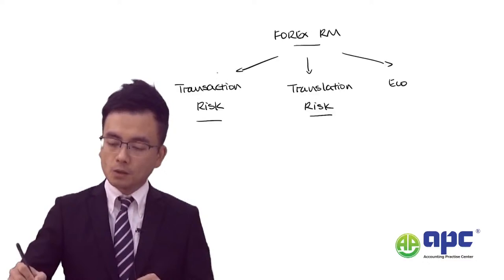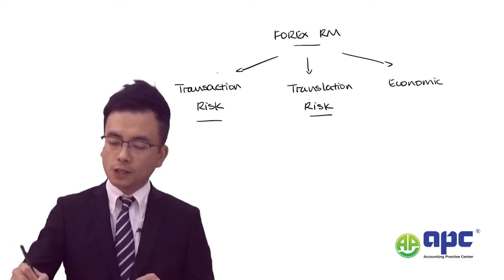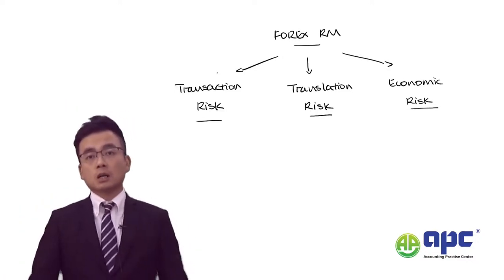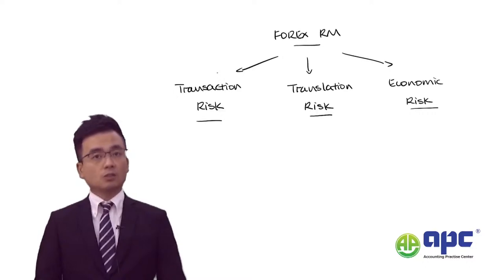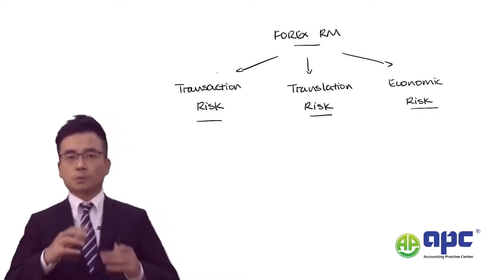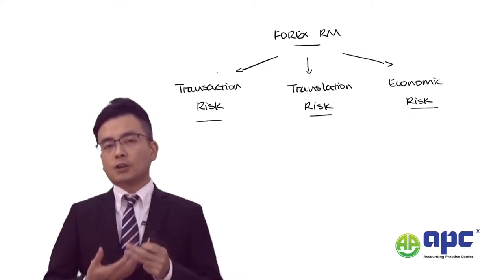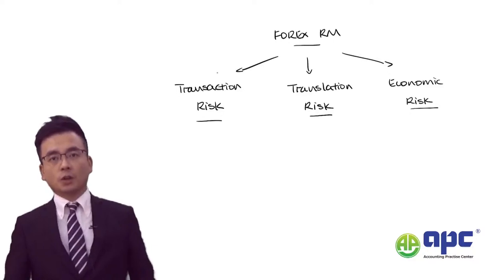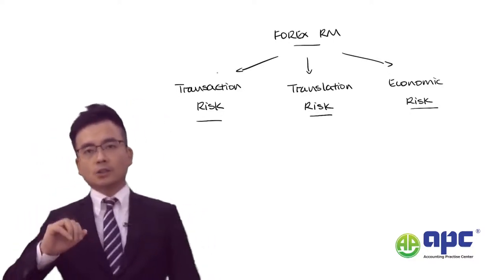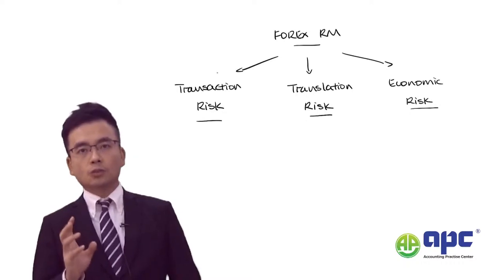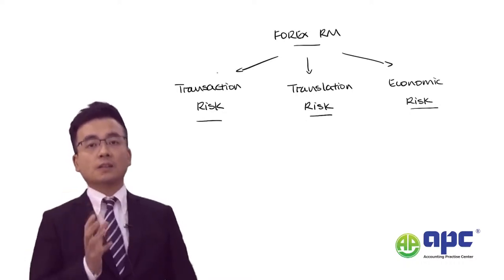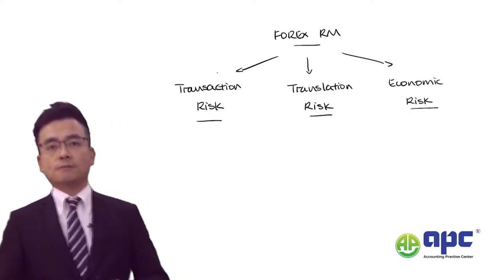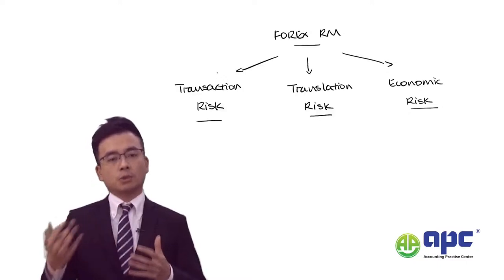And finally, economic risk — which means the continuous unfavourable direction of the currency against your home currency. For example, if you are receiving foreign currency but that currency continues to weaken against your home currency.